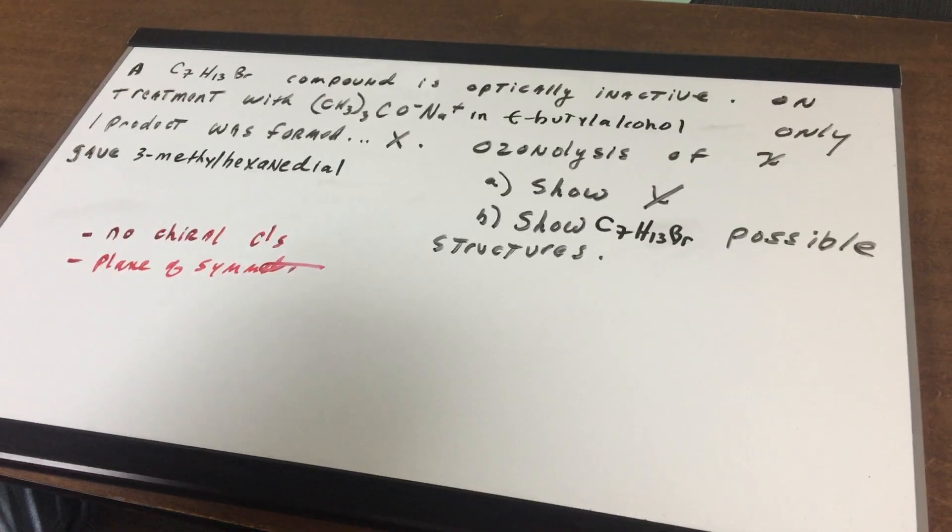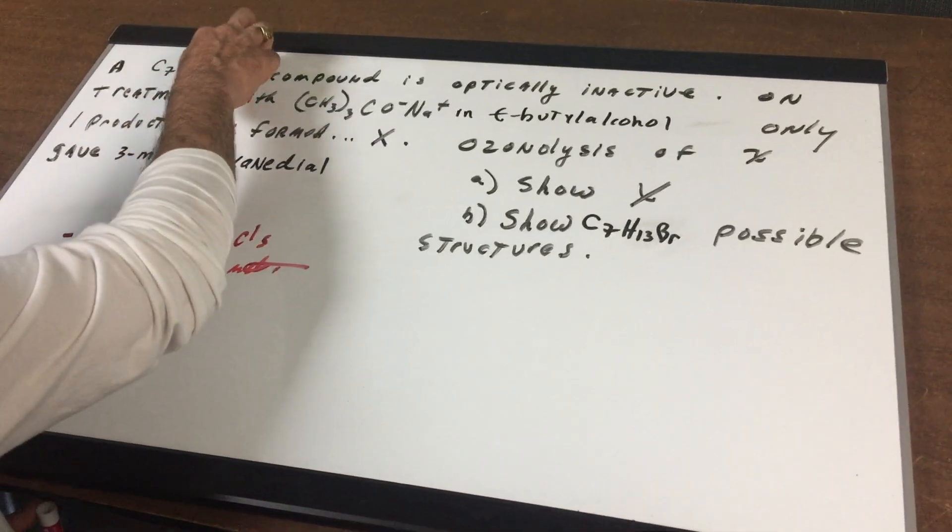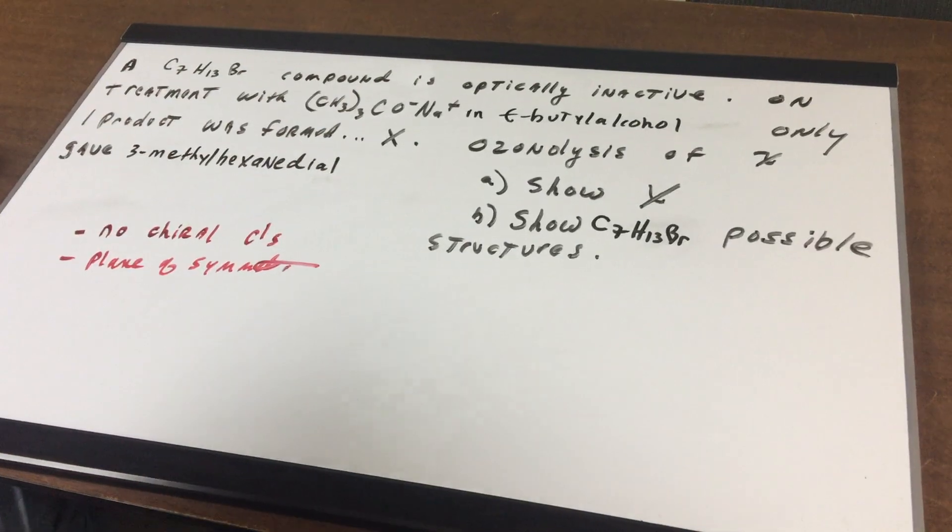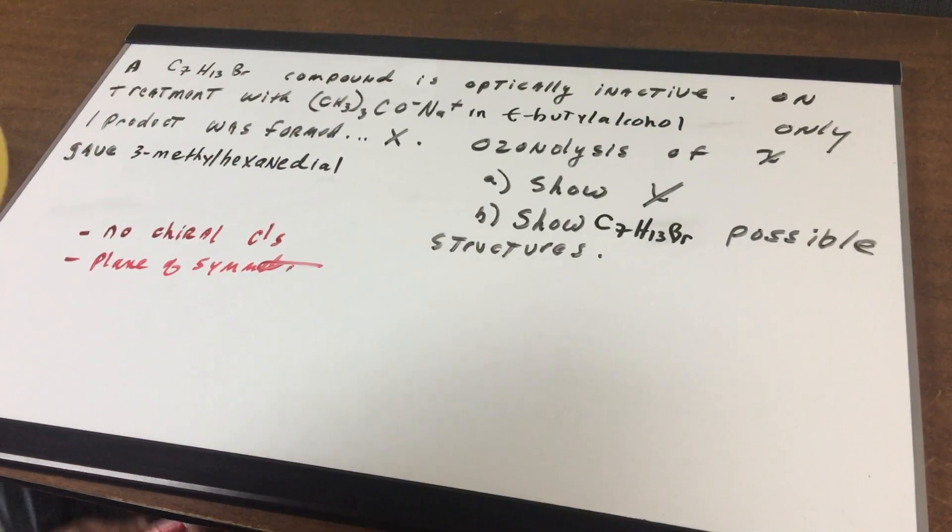So we know there's no chiral carbons and there's going to be a plane of symmetry in this molecule. Well, the first thing that I'm going to do is I want to see what kind of compound this is. So I'm going to do what's called the degree of unsaturation, which I've shown in another video how to calculate. So let's go over to the board and look at how I did this.